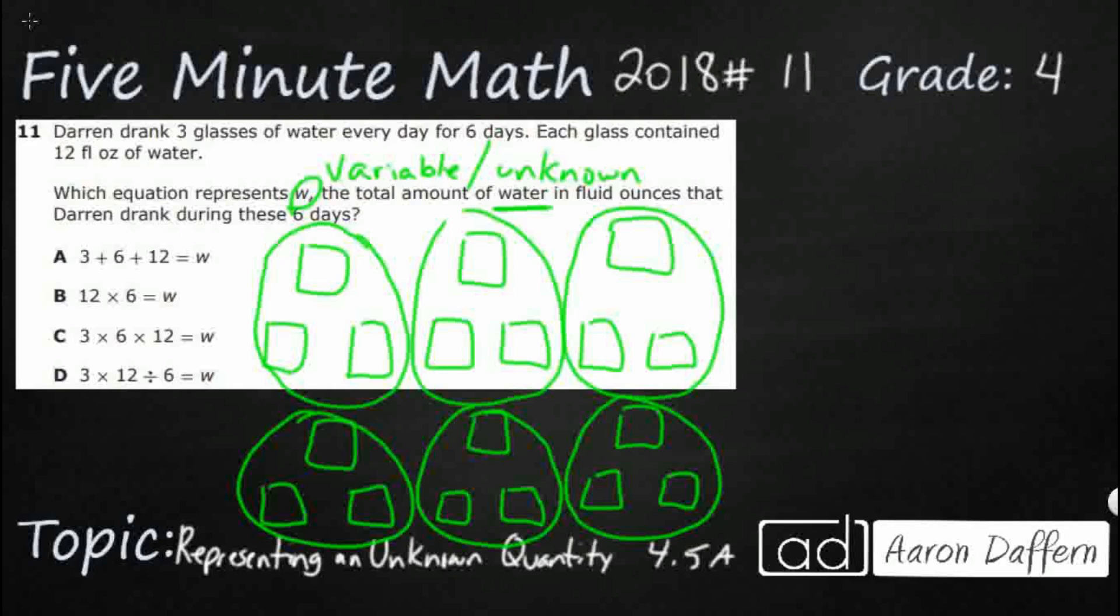Each glass contains 12 fluid ounces. So now I've got to put 12s in each of these. So I could add 12, 18 times, that would take forever. I could multiply 18 times 12, that could work.